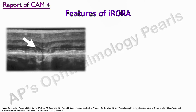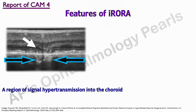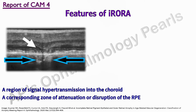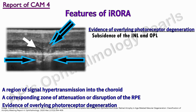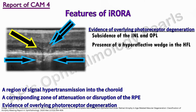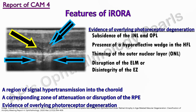The fourth CAM report detailed the features defining I-RORA in the context of AMD with conventional drusen, which include three OCT features that should be present and vertically aligned: a region of signal hypertransmission into the choroid; a corresponding zone of attenuation or disruption of the RPE with or without persistence of basal laminar deposits; and evidence of overlying photoreceptor degeneration such as subsidence of the inner nuclear and outer plexiform layers, presence of a hyporeflective wedge in Henle's fiber layer, thinning of the outer nuclear layer, disruption of the external limiting membrane, or disintegrity of the ellipsoid zone — and when these criteria do not meet the definition of C-RORA. An RPE tear is also an exclusion criterion. If only some of the three main criteria are present, such a person should be said to be at risk for progression to I-RORA.